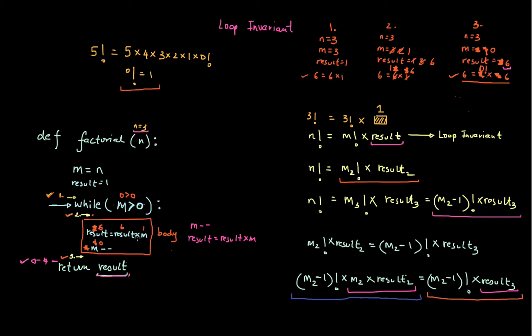So my question now is: why do I have it in this way — result equals result times m, followed by m minus minus — rather than having m minus minus first and then result equals result times m?